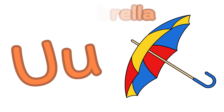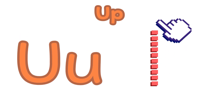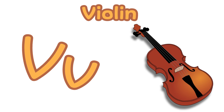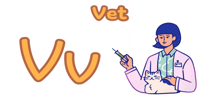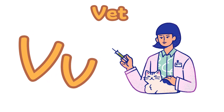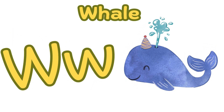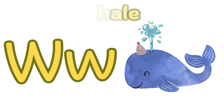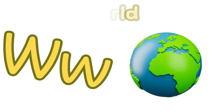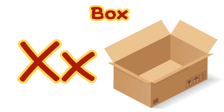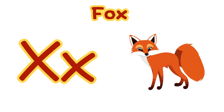U is for umbrella. U, u, u — umbrella. U is for up. Up, up, up. V is for violin. V, v, v — violin. V is for van. W is for whale. W, w, w — whale. X is for fox.